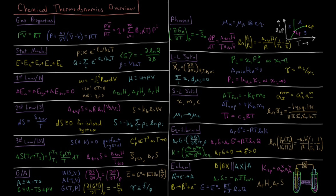This video is an overview of the chemical thermodynamics playlist. We start by looking at gas properties, and we have the ideal gas equation, that PV-bar equals RT: pressure times molar volume equals gas constant times temperature.